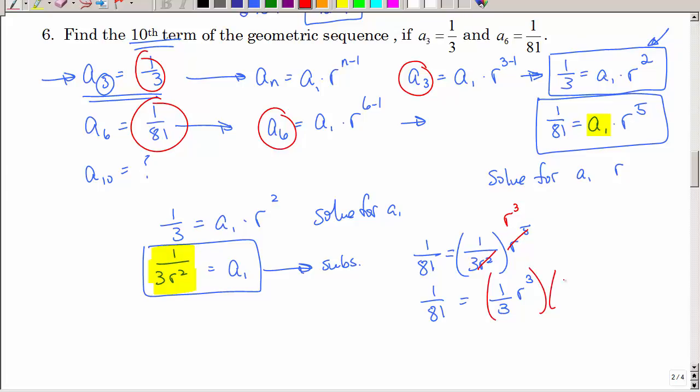I need to get r by itself. So, I'm going to multiply both sides by 3. I'm going to reduce. 3 goes into 81 27 times. And then, I'm going to take the cube root of both sides. So, I'm going to get r to be 1 third.